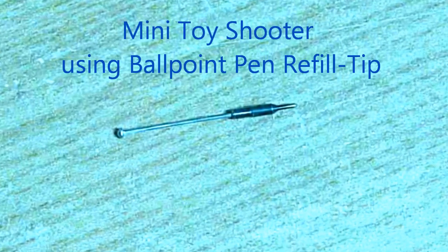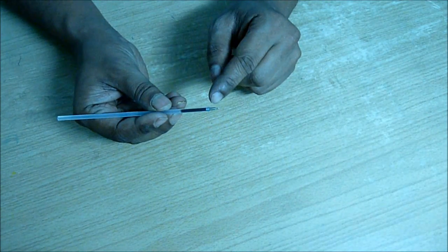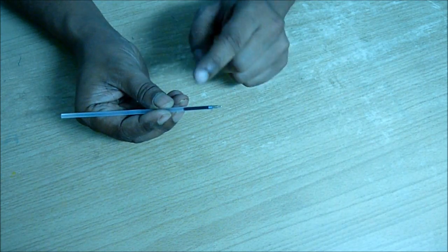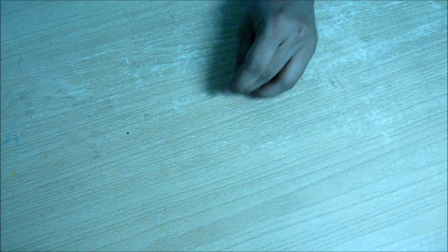Hello there, we are going to make a mini toy shooter using a ballpoint pen refill. You need an empty refill. Take the tip out - I already took it out - and clean all the ink inside with soap.